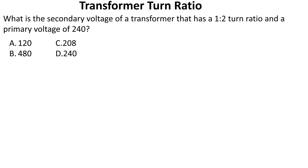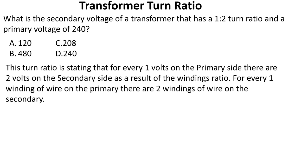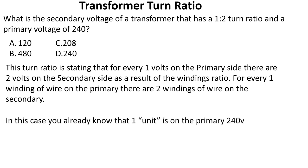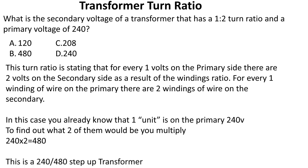What is the secondary voltage of a transformer that has a one-to-two ratio and a primary voltage of 120? This turn ratio states that for every one volt on the primary there are two volts on the secondary. We already know the one unit on the primary: it's 240. Multiply 240 by two to get 480. This is a 240/480 step-up transformer and we select B.